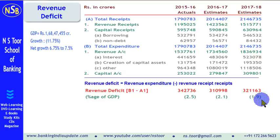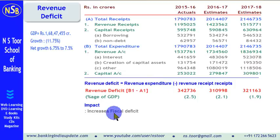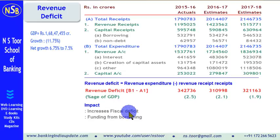What is the impact of revenue deficit? The first impact is it increases fiscal deficit. Since fiscal deficit takes into account entire expenditure and revenue deficit also takes into consideration revenue expenditure, if revenue expenditure increases then total expenditure also increases, leading to an increase in fiscal deficit.